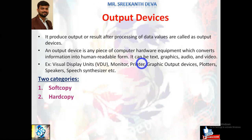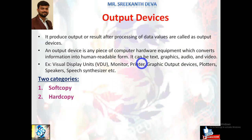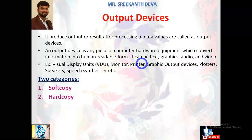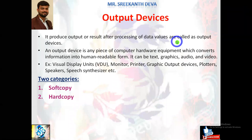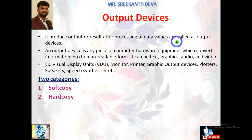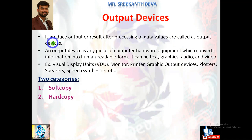What is an output device? A device that produces output or result after processing of data values is called an output device. We know how to give data and instructions through input devices. Once data is given to the computer, it is internally stored in memory, then processed, and the output information is given to end users with the help of output devices.